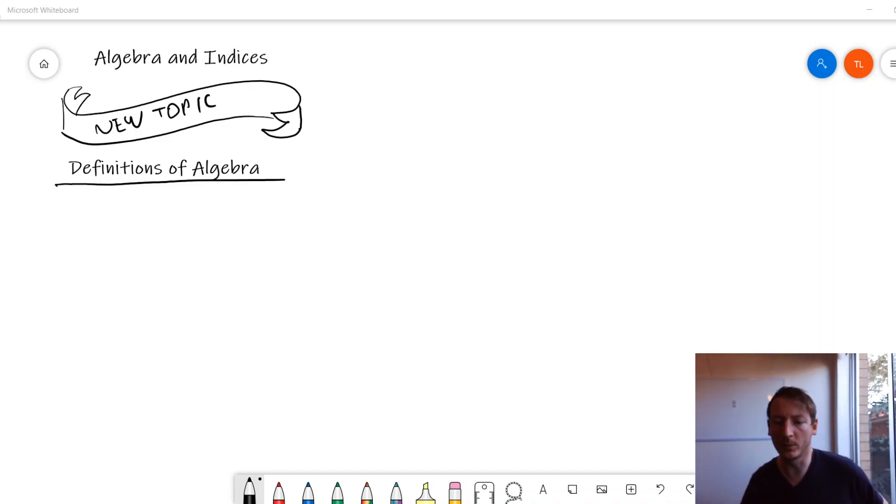All right, so, new topic. We're going to have a look at algebra and indices, which we started last year. You would have done with your Year 7 teacher, looking at a lot of algebra and equations. And so we're just going to review some of that algebra to make sure we're all on the same page.